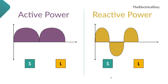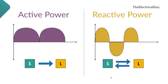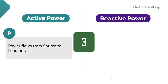Active power is always positive, which means power flows from source to load only. However, in the case of reactive power, power flows in both directions — when it is on the positive side it flows from source to load, and when it is on the negative side it flows from load back to source.